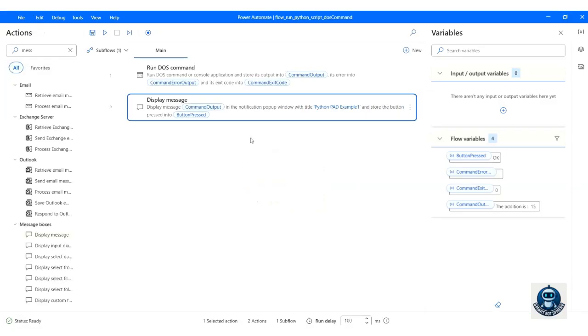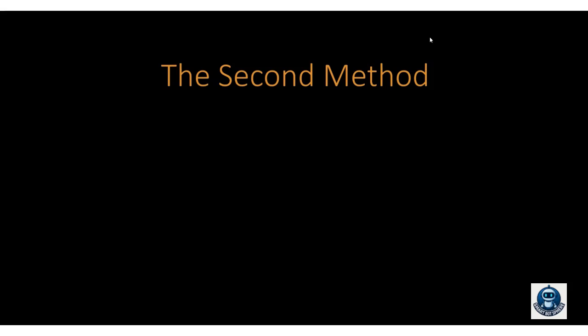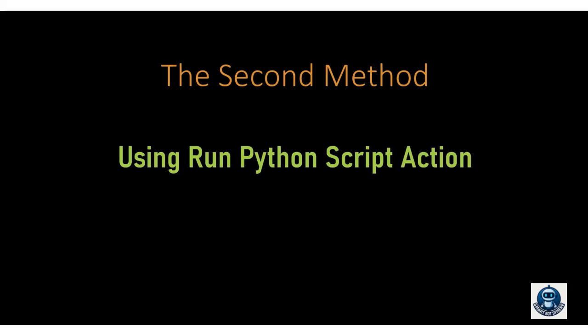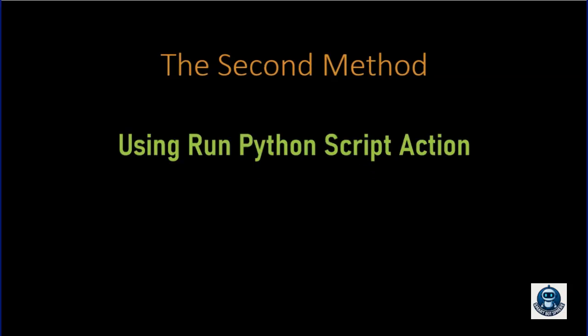We've learned the first method. Now let's see the second method, where we write Python code directly using the Run Python Script action.